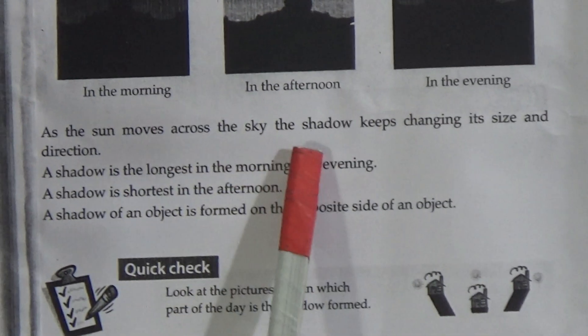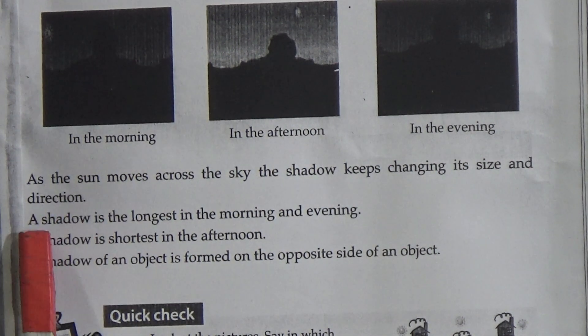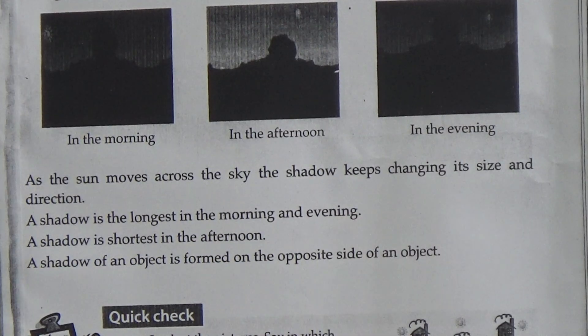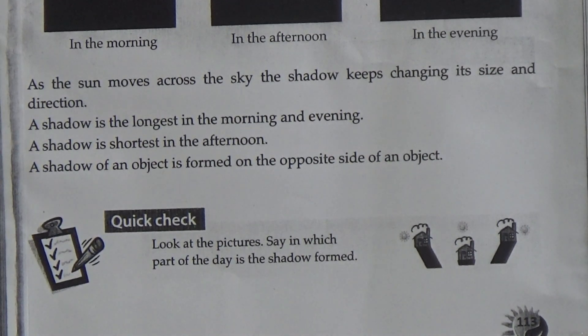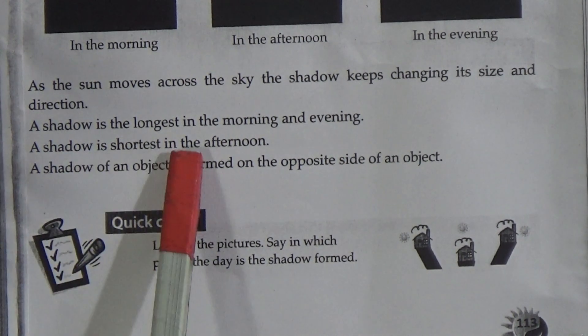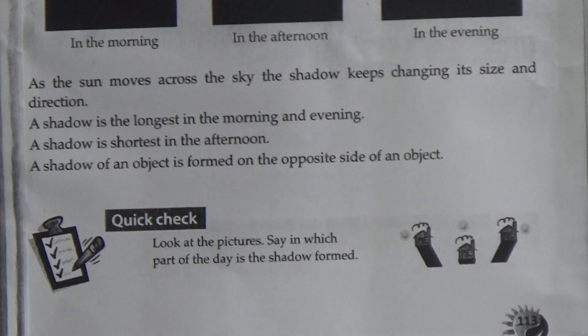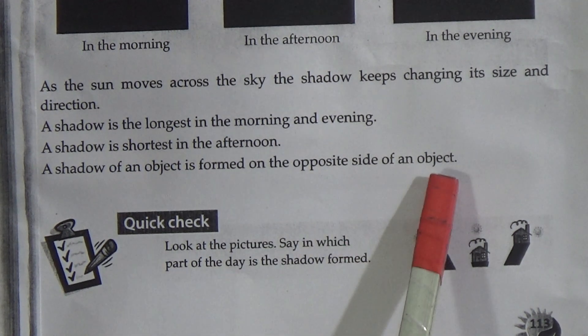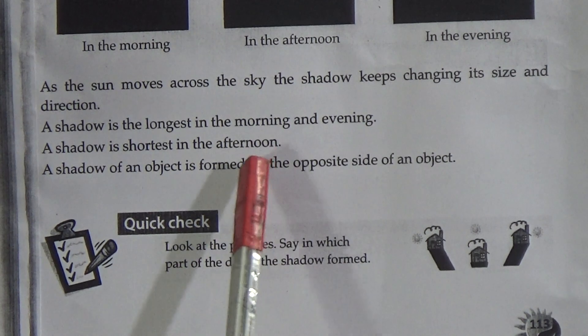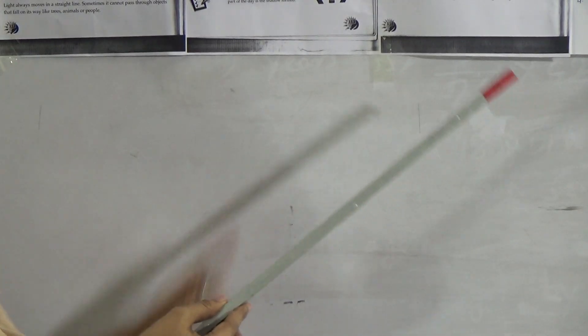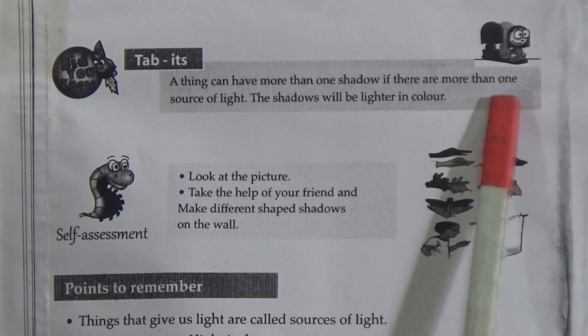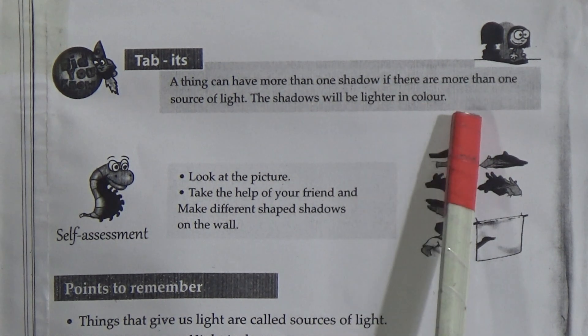Length and direction of a shadow. As the sun moves across the sky, the shadow keeps changing its size and direction. A shadow is the longest in the morning and evening. A shadow is shortest in the afternoon, because the sun gives light on the top of our head. A shadow of an object is formed on the opposite side of the object. Also, things can have more than one shadow if there are more than one source of light, and those shadows will be lighter in color.